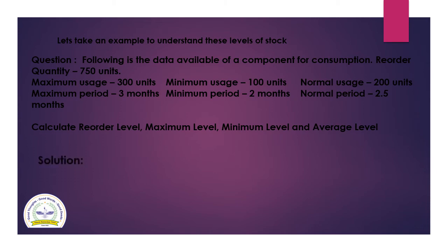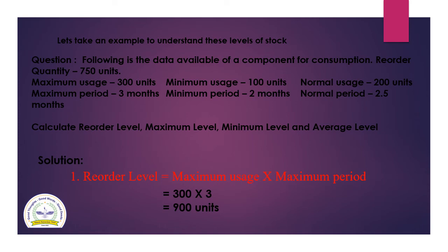By applying the formula, let us first calculate re-order level: maximum usage multiplied by maximum period. Taking the values: 300 units multiplied by 3 months comes to 900 units.